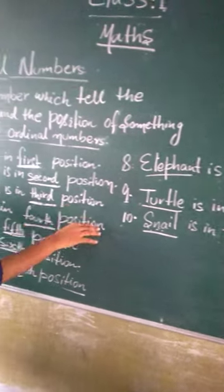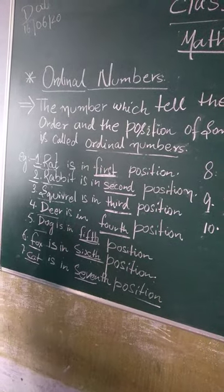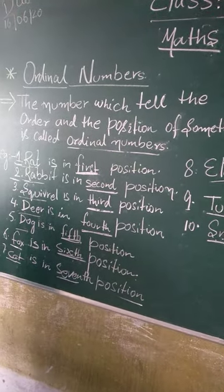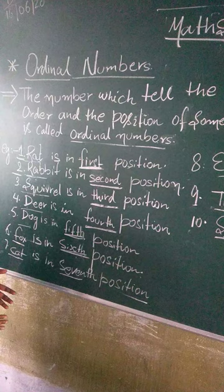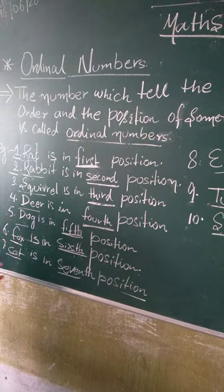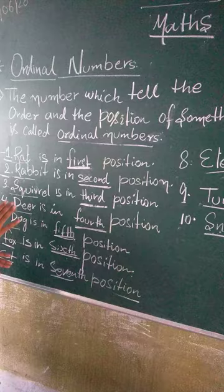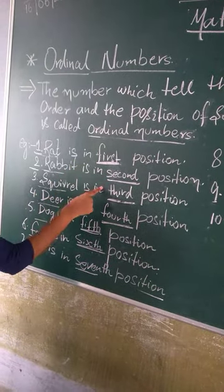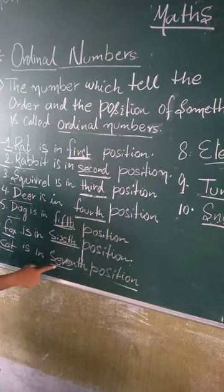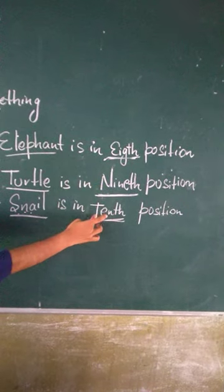See once again. Today's topic is Ordinal Number. The number which tells the order. 1st, 2nd, 3rd, 4th, 5th, 6th, 7th, 8th, 9th, 10th.